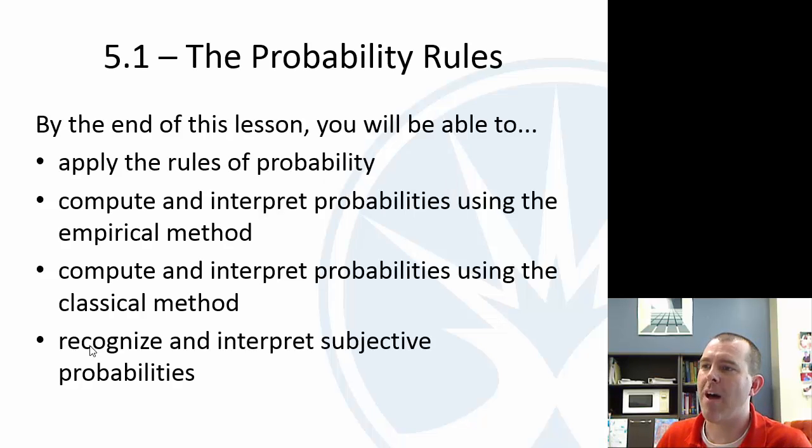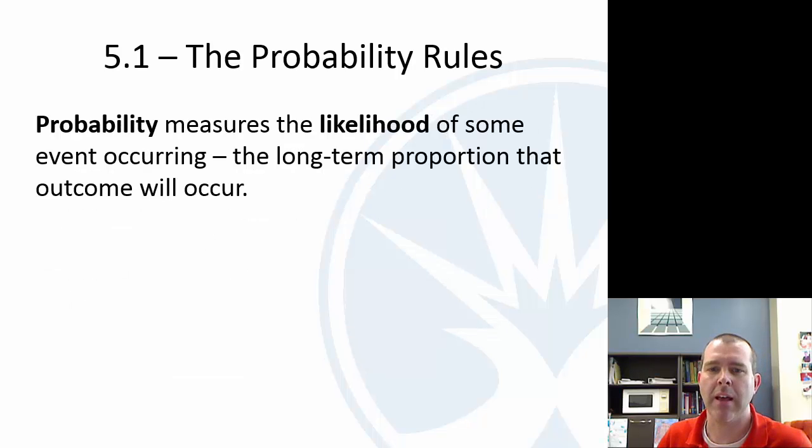The first section here, 5.1, we're going to talk about some rules of probability, how to compute and interpret probabilities with a variety of methods. I don't know if we'll talk about subjective probabilities. That's on the outline here, but I think that's more in the online lesson.